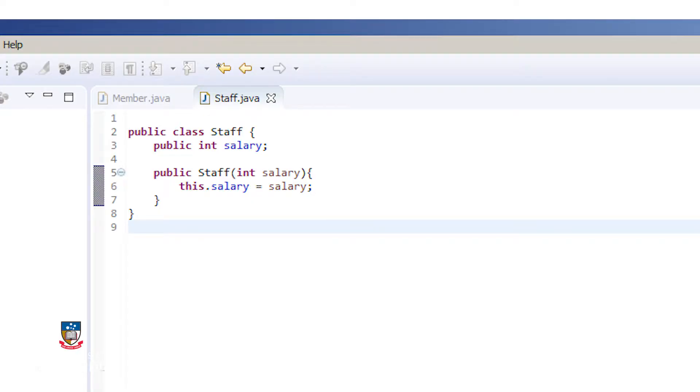A subclass declares that it extends its single direct superclass. Let's make staff inherit from member. To do this, I can modify the class descriptor to be public class staff extends member.